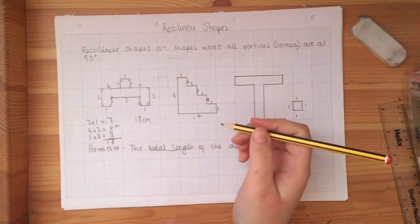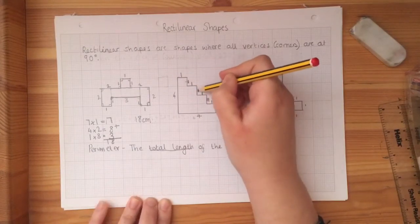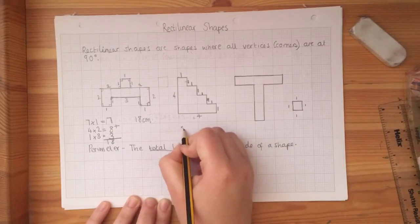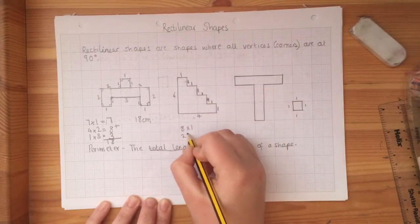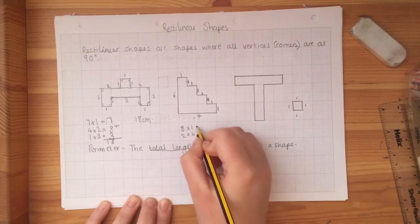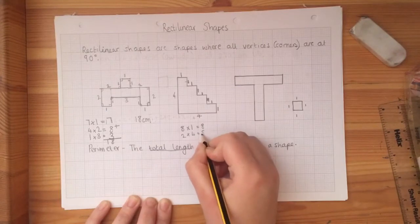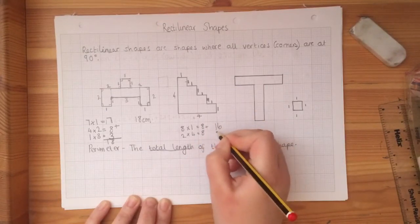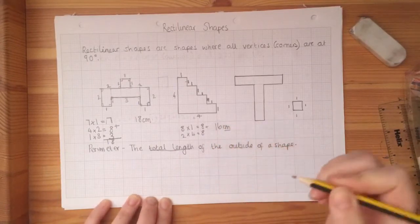So I'm going to do my timesing again. So I know that I've got one, two, three, four, five, six, seven, eight times one. And I've got two times four. So eight times one is eight, two times four is eight. And we should all know that eight add eight is 16. You need to remember our units as well. So it's 16 centimetres.